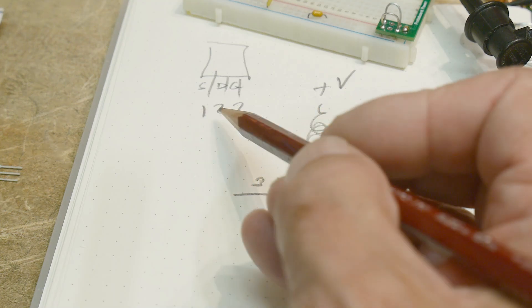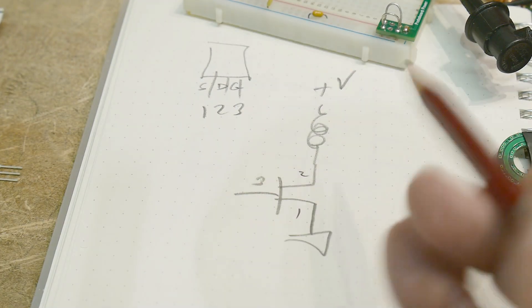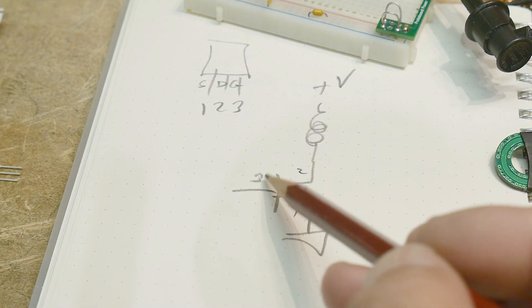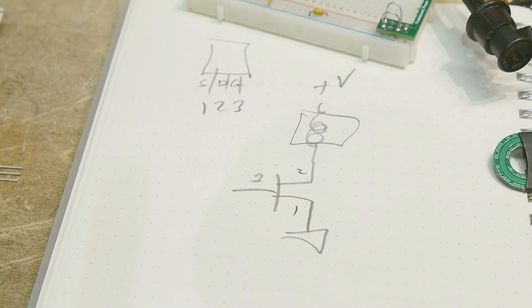All right. So our tester said pins 1, 2, 3 were source, drain, gate. So source, drain, gate. And so we're going to have a load here and have plus V. Okay.